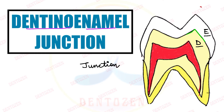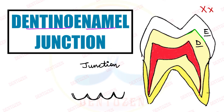Under the microscope it appears like a series of curves. So why does the dentino-enamel junction have this appearance, how does it form, and what term should be used for this appearance? You will get to know all your answers in today's video.